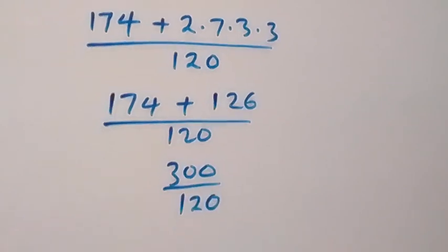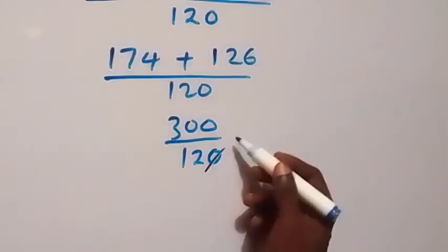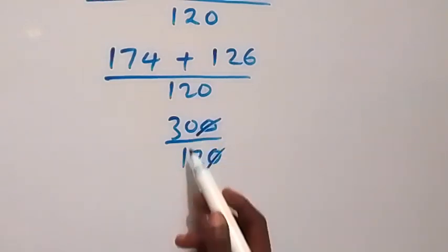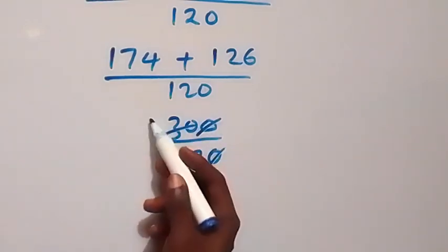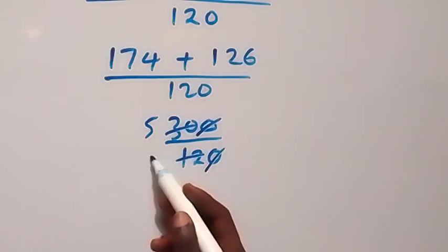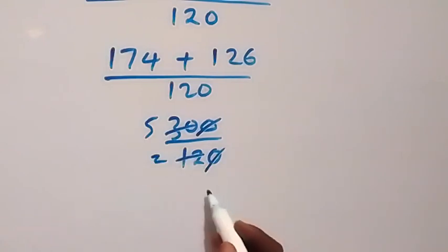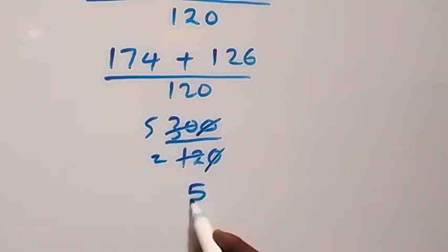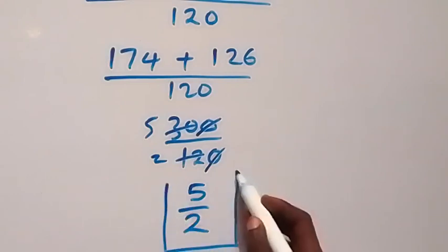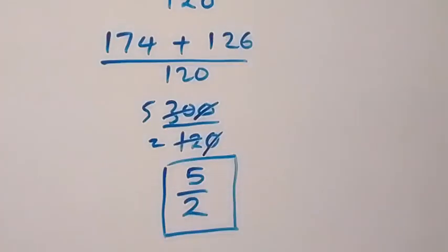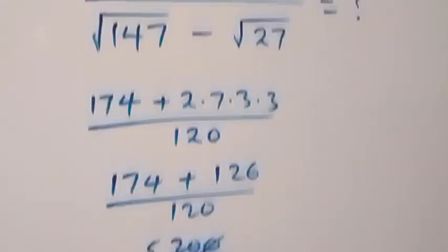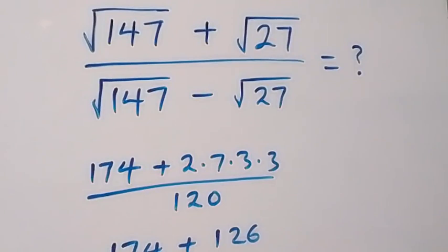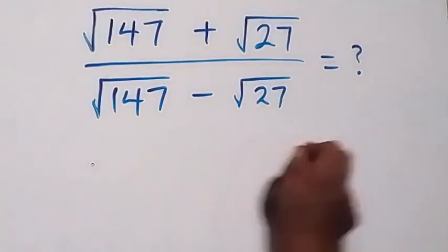Now we count: 174 plus 2 times 7 times 3 times 3, which gives us 174 plus 126, equals 300 over 120. We cancel: 60 goes into both, giving us 5 over 2. So here we have the solution in the first method. Now let's use another method — method two.